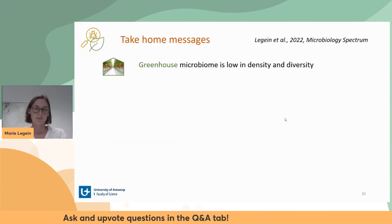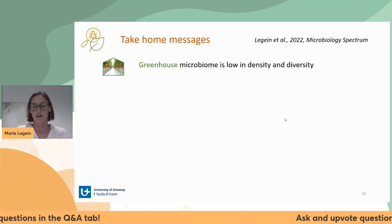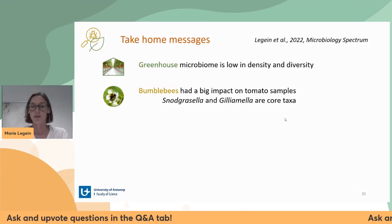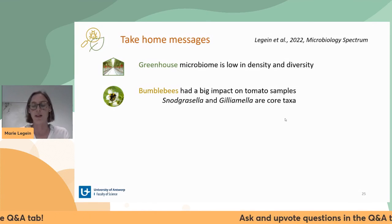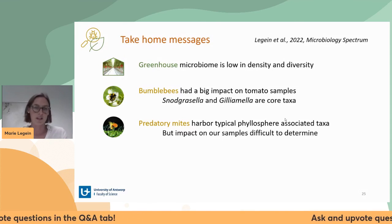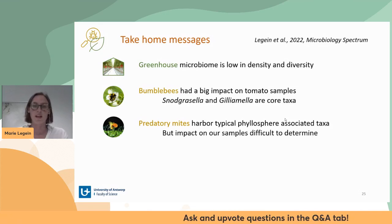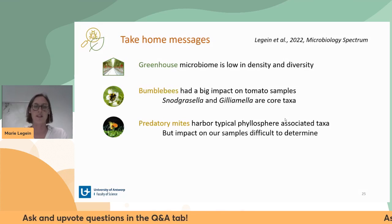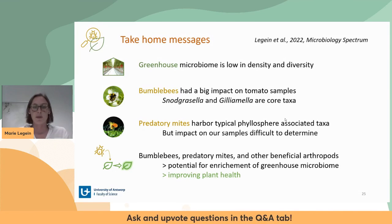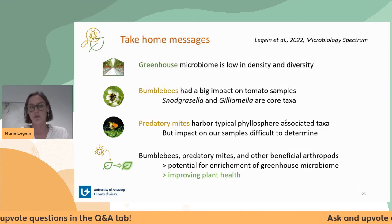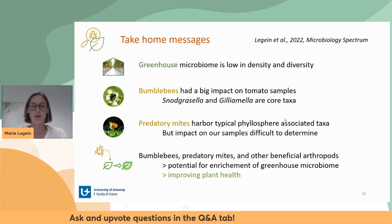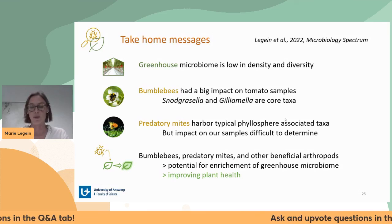In conclusion: the greenhouse phyllosphere microbiome was low in both absolute abundance and diversity. Bumblebees had a big impact on tomato samples, most visible as Snodgrassella and Gilliamella being core taxa. Predatory mites harbor more typical phyllosphere taxa like Pseudomonas and Sphingomonas, but their batch-to-batch variation made it difficult to determine their impact. Since bumblebees, predatory mites, and probably other beneficial arthropods introduce bacteria into this microbially poor greenhouse environment, we could potentially use this to introduce beneficial microbes and thereby improve plant health.